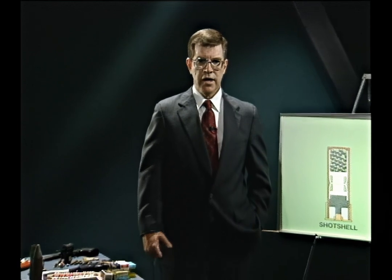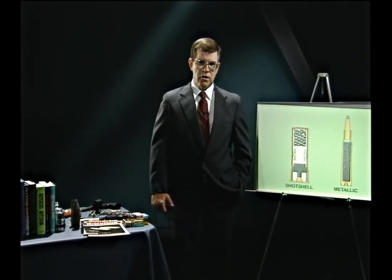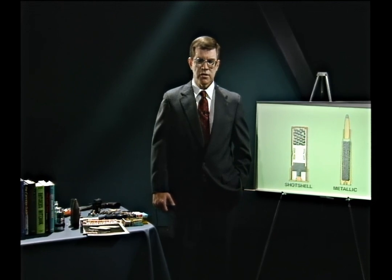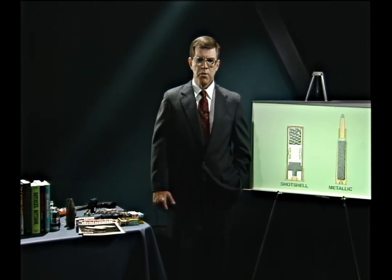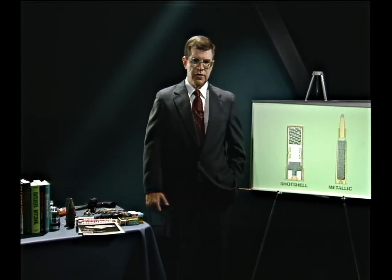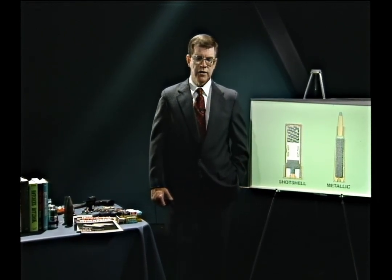I'm Luke Haig, a criminalist and forensic firearms examiner involved in the examination of such evidence. In this initial tape, we're going to look at some basic information concerning firearms ammunition, its construction, bullet design, propellants, firearms design, how the cartridge and the firearm go together, how marks are created on cartridges and bullets, and briefly how identifications are made. More importantly, this is background information useful to a wide variety of audiences.